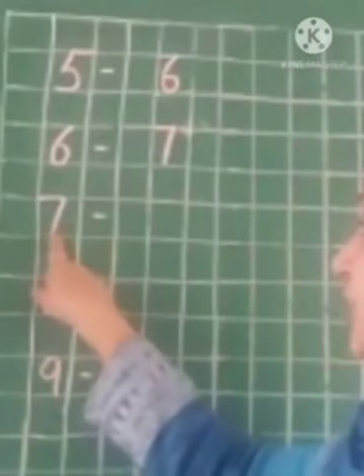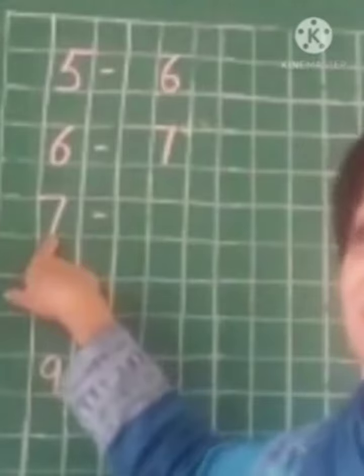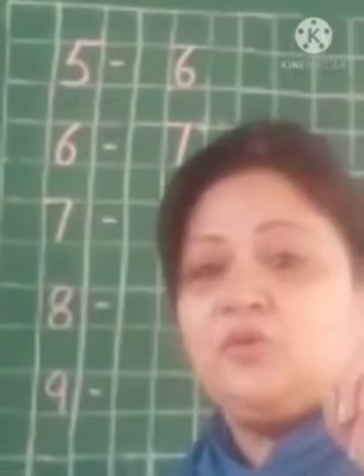So what's the next number? This is number 7. So children, let's recollect what comes after number 7. Count with me.